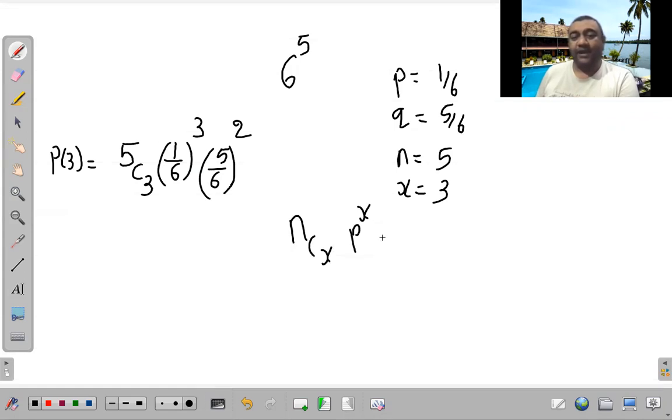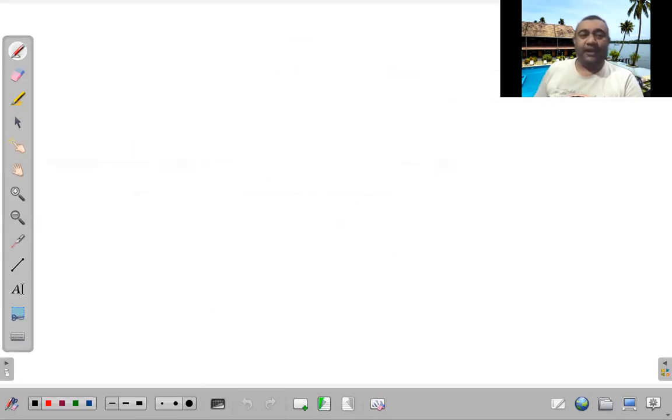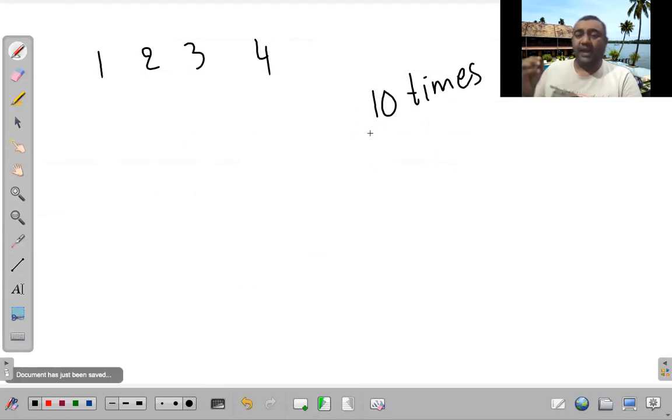But if I put binomials then how much is it? N C X P raise to X Q raise to N. Find the probability that coming here is a success, and find the probability of 4 success.